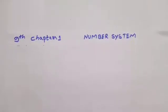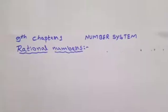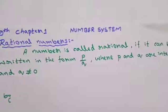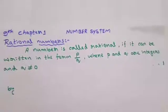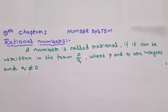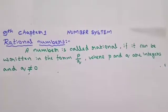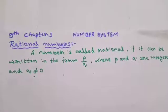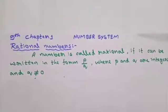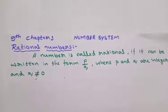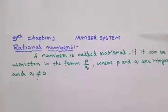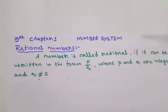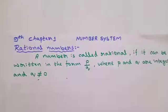Next, rational numbers. What is a rational number? A number is called rational if it can be written in the form of p by q, where p and q are integers and q is not equal to 0. The denominator q is not equal to 0.